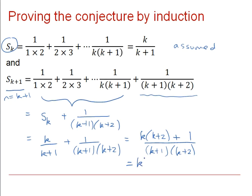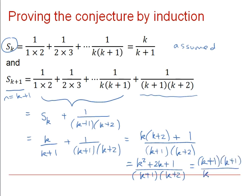That then becomes k squared plus 2k plus 1 over k plus 1, k plus 2. And if we factorise that, we will see that we get k plus 1 times k plus 1 over k plus 1, k plus 2. And we'll be able to cancel those two down.